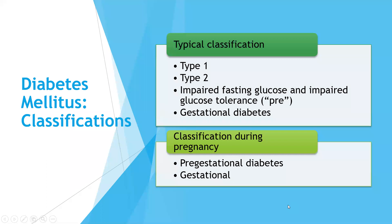Moving to conditions affecting pregnancy from chapter 20, starting with diabetes. Type 1, formerly called juvenile diabetes, is lifelong. Type 2 is acquired and now seen even in some obese children. There is also impaired fasting glucose or pre-diabetes. Gestational diabetes occurs only during pregnancy, and we'll focus on that here. A glucose tolerance test is done to identify diabetes during pregnancy, screening at 24 to 28 weeks.